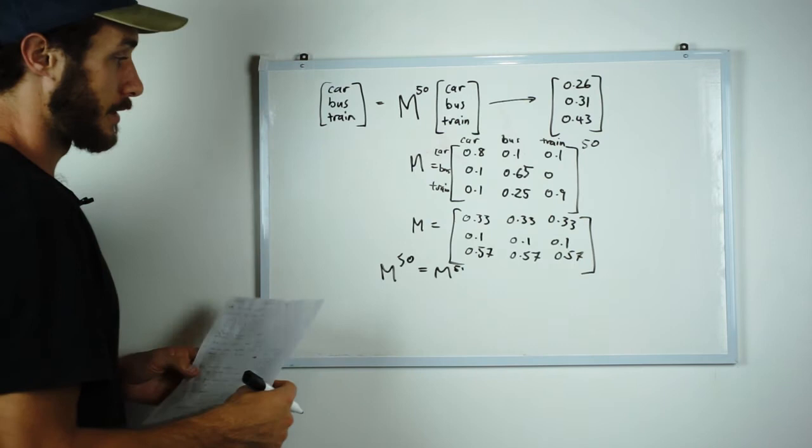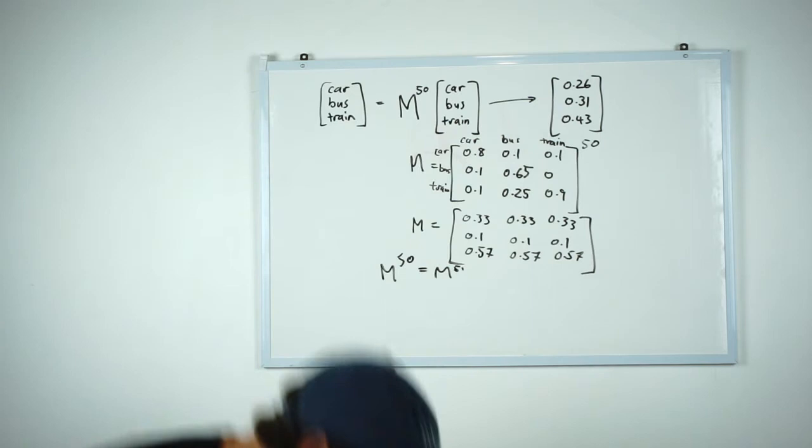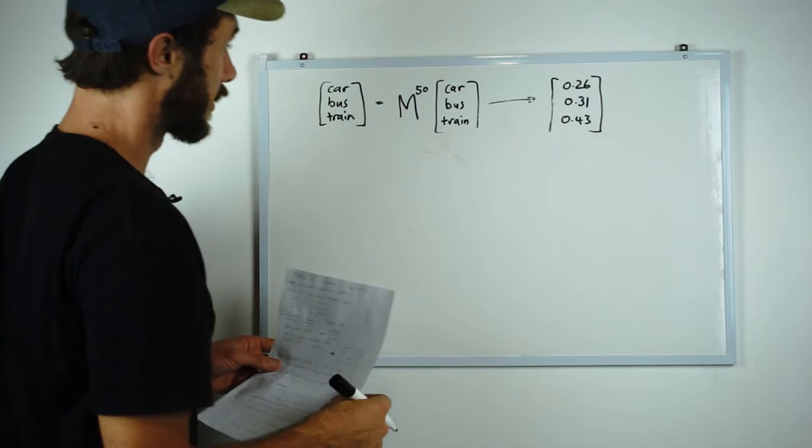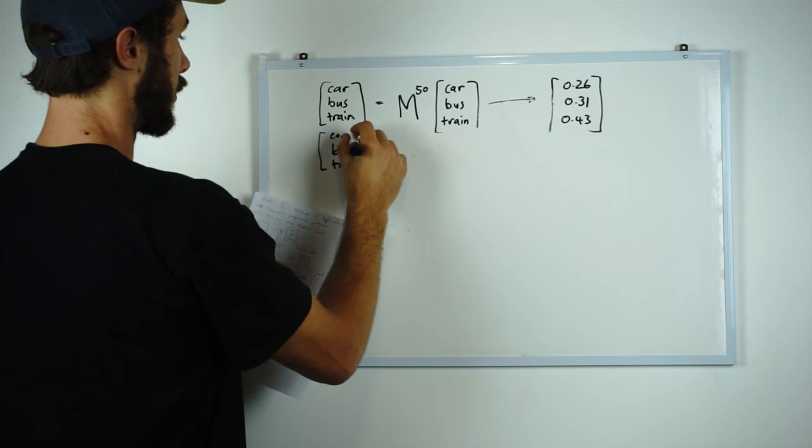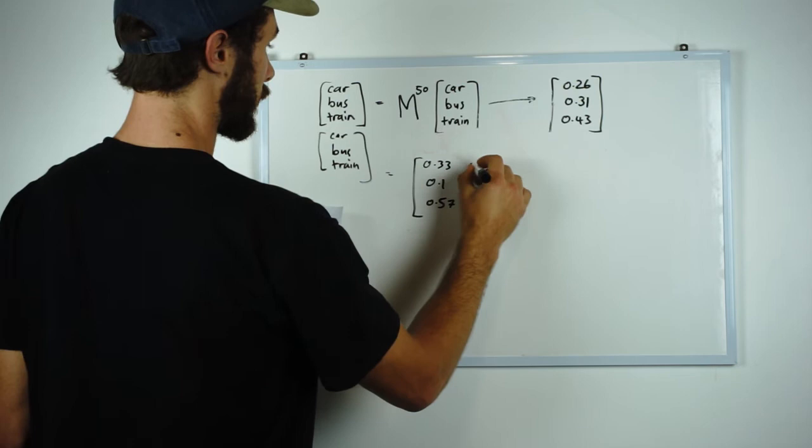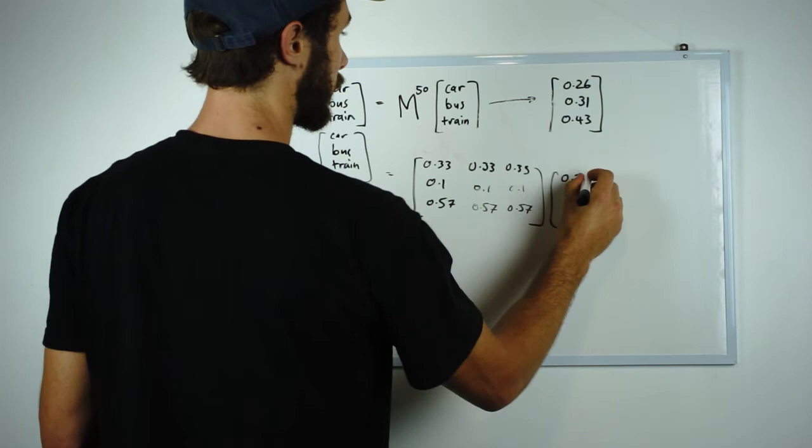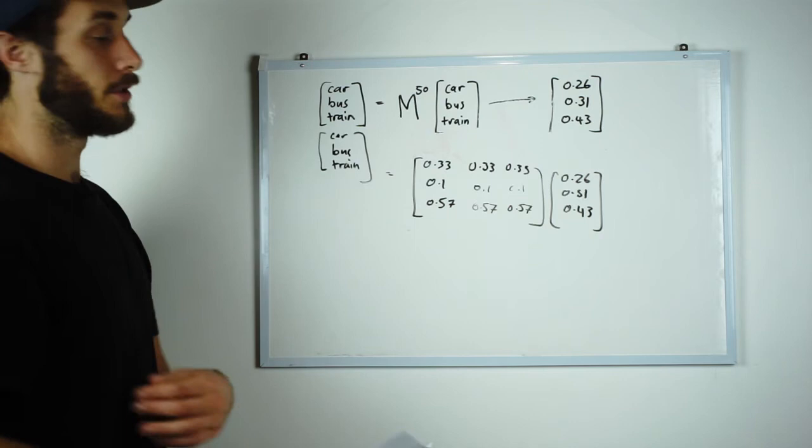So now the last step is to solve the problem. I'll just clean this up so I can show you how that's done. So now to solve the problem we just substitute in that transition matrix and it looks like this. Now we multiply out the matrix and we're all done.